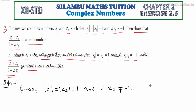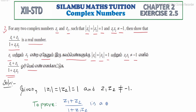Now we have to prove that z1 plus z2 divided by 1 plus z1 z2 is a real number.